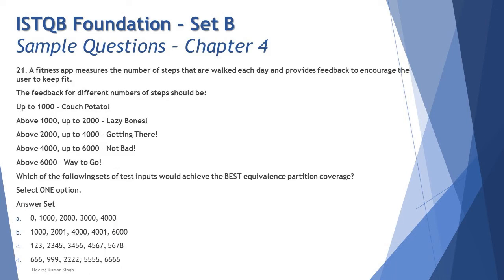Now the third question of this tutorial involves the technique of equivalence partitioning. The scenario: 'A fitness app measures the number of steps walked each day and provides feedback to encourage the user to keep fit.' Several categories are provided. What you need to do is transform the given ranges into a table — until you put it in a table format you can't determine how EP is applied, how many valid test cases fall under the same class, or which option covers all the partitions.